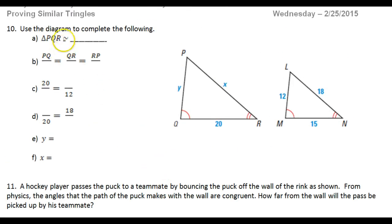So looking at number 10, use the diagram to complete the following. We're starting off here with a similarity statement. Now look at the angles to guide us. We can see that these triangles are oriented the same way. The Q and M are congruent, they're both on the left. The R and N are congruent, they're both on the right. So this should be pretty simple.